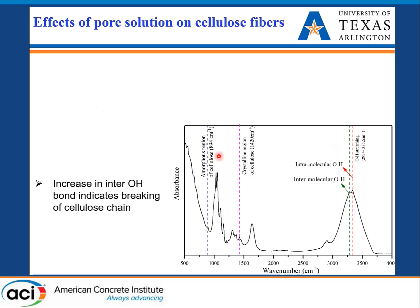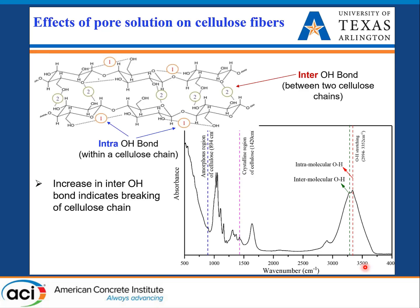This FTIR spectra for our cellulose nanofiber shows the amorphous and crystalline regions. We are mostly focusing on the hydroxyl region from 3000 to 3600 wavenumbers. There are two peaks: a narrow sharp peak and a broader peak, representing the intramolecular and intermolecular hydroxyl bonds respectively. Within the glucose chains, hydrogen bonds represent our intra-hydroxyl bonds; between two different cellulose chains, surface hydroxyl bonds represent our inter-hydroxyl bonds.